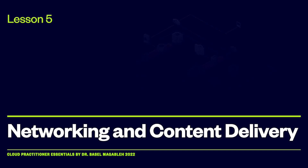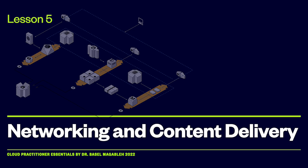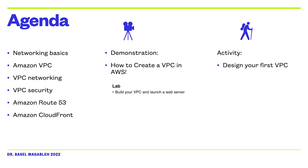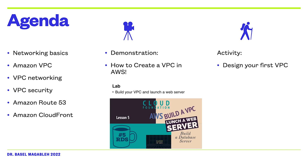Welcome to lesson 5: Networking and Content Delivery. This lesson covers three fundamental Amazon Web Services for networking and content delivery: Amazon Virtual Private Cloud (Amazon VPC) and Amazon CloudFront. We will start by looking into networking basics, then discuss Amazon VPC, why we need them and how we can create them. We'll also cover VPC security, Amazon Route 53, CloudFront content delivery, and a hands-on lab for building your VPC and launching a web server.